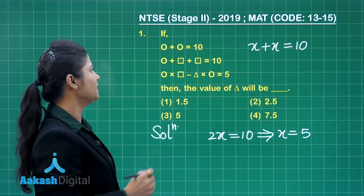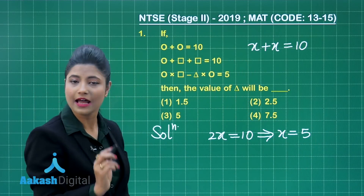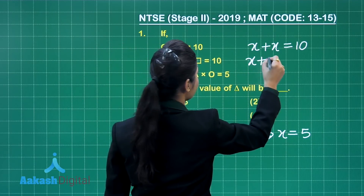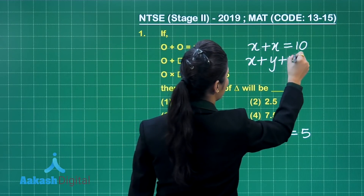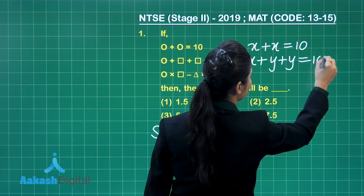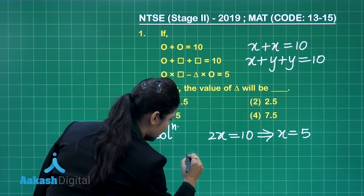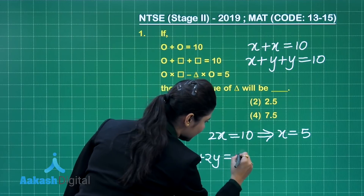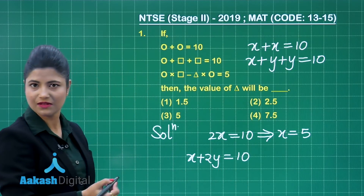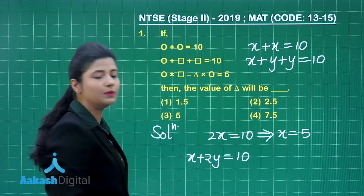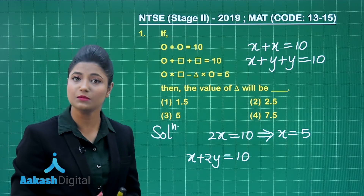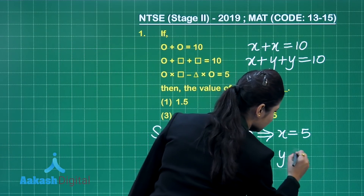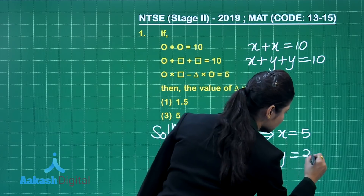Taking the second equation, I have considered the circle as x. Now I am taking the square as y. So this gives x plus 2y equals 10. I have already obtained x equals 5, so substituting: 5 plus 2y equals 10, which simplifies to give the value of y equal to 2.5.